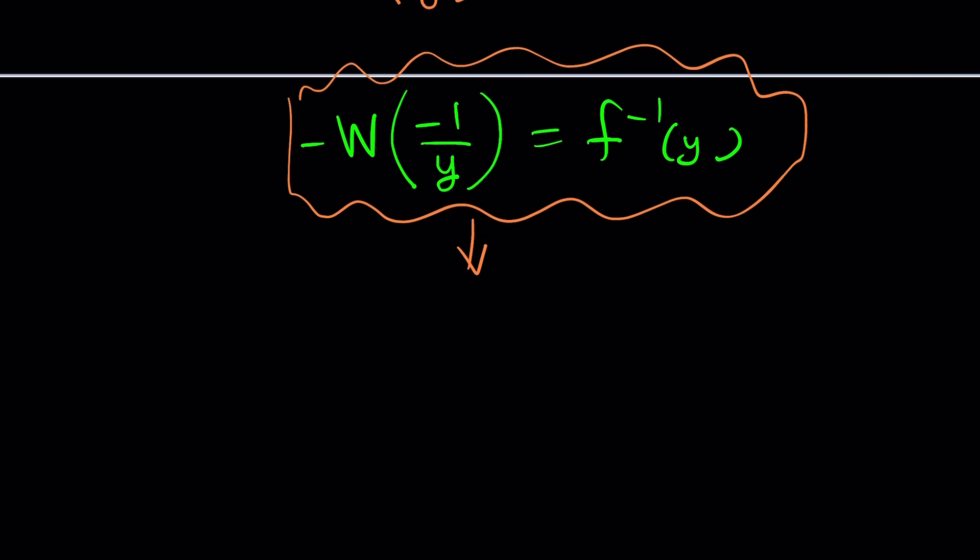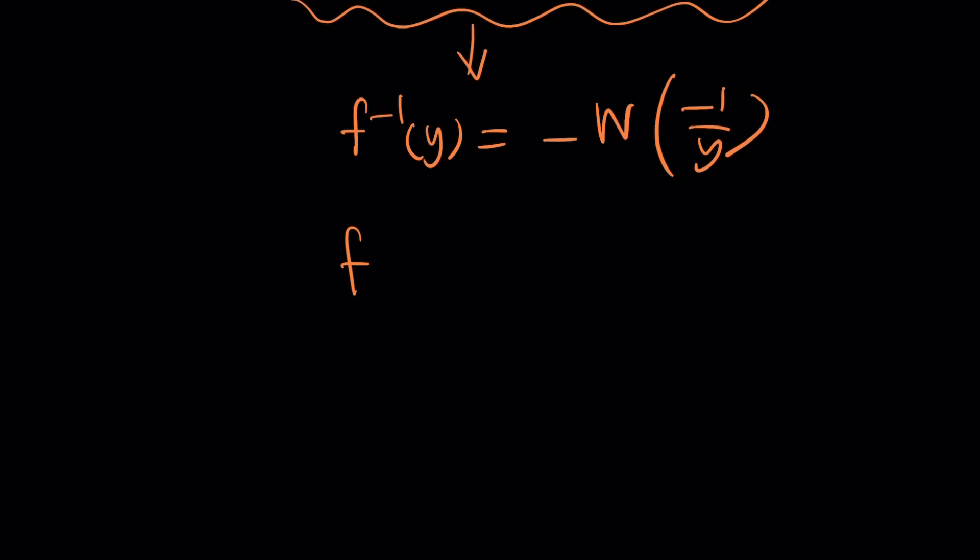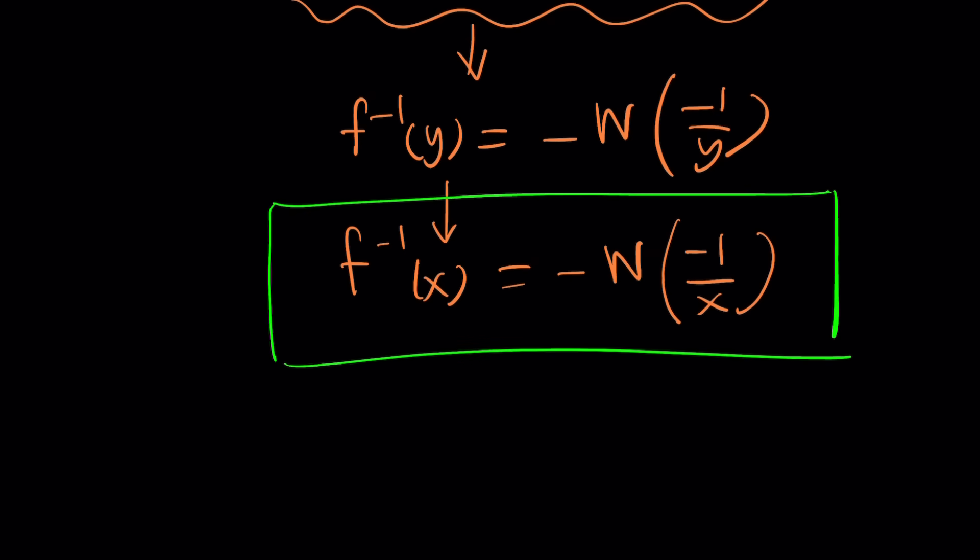But here's what I'm going to do. I'm going to replace y with x on both sides. So again, one more time, let me switch sides so you can see better. Now this is what I got as a result. And since I want to find f inverse of x, I'm replacing y with x on both sides. And that's totally legitimate. I can do that. So f inverse becomes negative W of negative one over x.